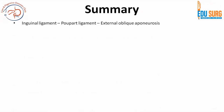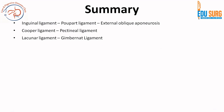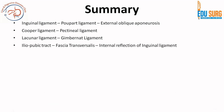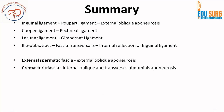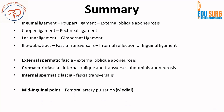This slide on ligament nomenclature has been discussed in the anatomy section but is very important for exams, so we are revising it here. The inguinal ligament and Poupart's ligament are both derived from external oblique aponeurosis. Cooper's ligament becomes the pectineal ligament. The lacunar ligament is the Gimbernat's ligament. The iliopubic tract and fascia transversalis is the internal reflection of the inguinal ligament. External spermatic fascia is the external oblique aponeurosis. Cremasteric fascia is the union of internal oblique and transversus abdominis aponeurosis. Internal spermatic fascia is fascia transversalis. The mid-inguinal point is the femoral artery pulsation and is medial to the midpoint of the inguinal ligament, which is the deep inguinal ring. There are not less than 20 multiple choice questions in this slide — remember this for life.